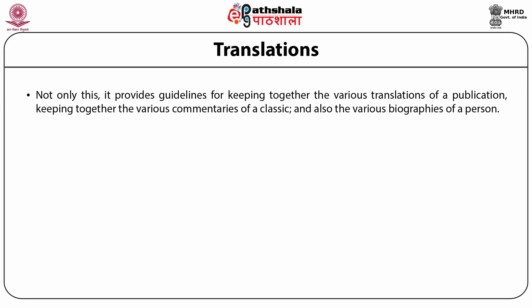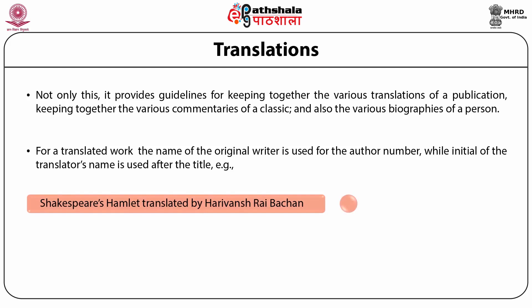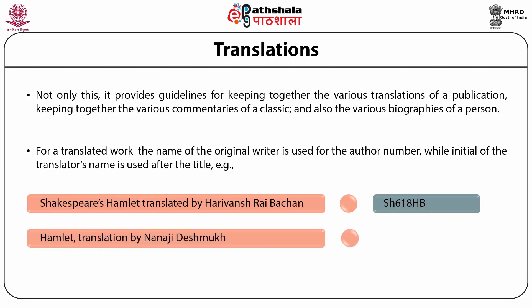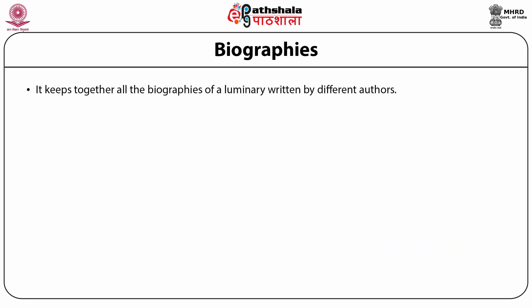Translations get special book numbers to keep them with the original. The table provides guidelines for keeping together the various translations of a publication, the various commentaries of a classic, and the various biographies of a person. For a translated work, the name of the original work is used for the author number, while the initial of the translator's name is given after the title. For example, Shakespeare's Hamlet translated by Harivansh Rai Bachchan gets the number SH618HB — SH618H stands for Shakespeare's Hamlet and B stands for Bachchan. Hamlet translated by Nanaji Deshmukh gets SH618HD, where D stands for Deshmukh. This keeps together all translations of a given work.